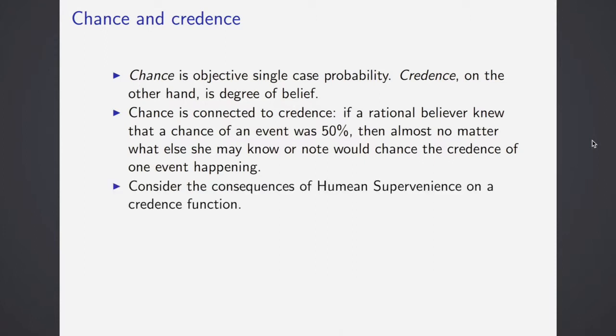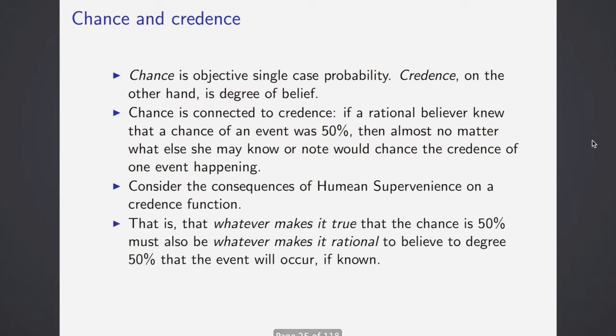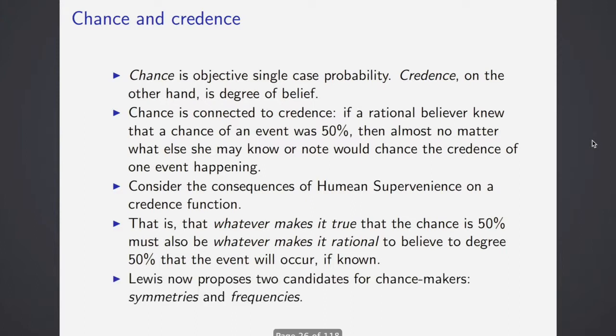Chance is connected to credence. For instance, if a rational believer knew that the chance of an event was 50%, then there's little that could move the person to rationally believe that one event over another is going to be more likely. They're both equally as likely, both 50% chance. That's how chance can be connected to credence. Consider now what the consequences of Humean supervenience might be on a credence function, like what it would take in the spatiotemporal relations of things to make chance and to make credence.